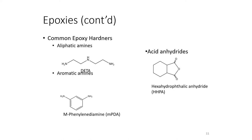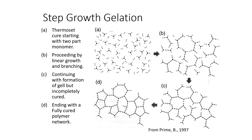Here are some more chemical structures of epoxy hardeners — aliphatic amines, aromatic amines and acid anhydrides. Here, the step-growth gelation of a polymer network is shown. The thermoset cure starts with a two-part monomer. In the next step, the process proceeds by linear growth and branching, followed by continued formation of gel but incompletely cured. In the final step, the process ends with a fully cured polymer network.